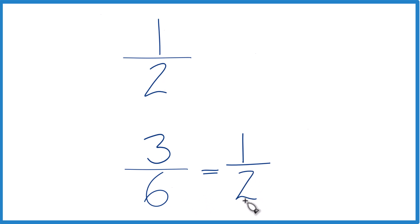2 times 3 is 6. And now you can see 1 half and 1 half, these are equal. So 1 half and 3 6, they're equal.